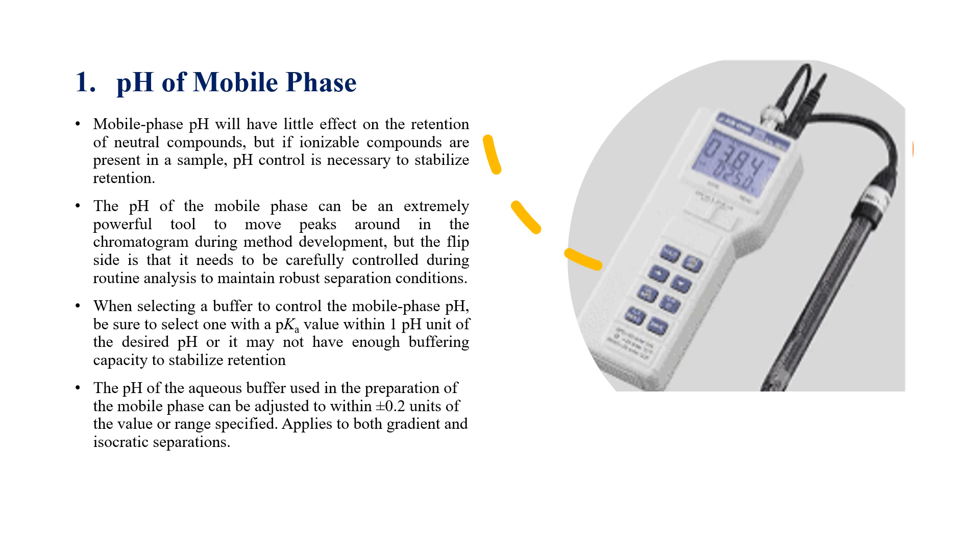But we have those compounds that require pH to be monitored in order to stabilize the retention time. So when you're choosing a buffer or the mobile phase, you need to choose a mobile phase that will give you a desired pH that can stabilize the retention time.